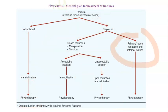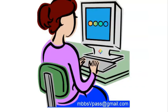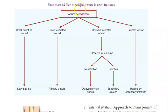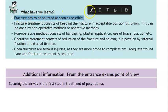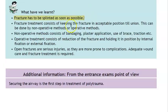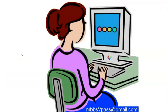After open reduction and internal fixation, give physiotherapy. For open fractures with a wound, perform wound debridement, give tetanus prophylaxis, and third-generation cephalosporins. Wound quality — clean, doubtful, or infected — determines wound care approach. Remember: splinting is the first priority, followed by RICE, reduction, internal fixation, cast, brace, and splint.